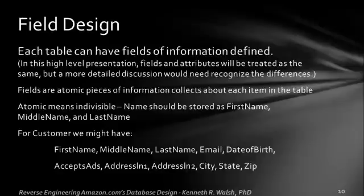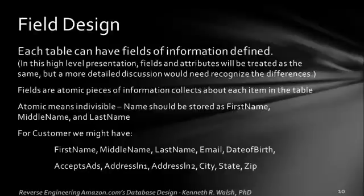For the customer table, we see that a customer is going to have a first name, middle name, last name, email, date of birth, accepts ads, address line one, address line two, city, state, and zip — just some of the fields. It will probably have more than that; this is just our first pass at it. Notice how the address is broken up into its components.